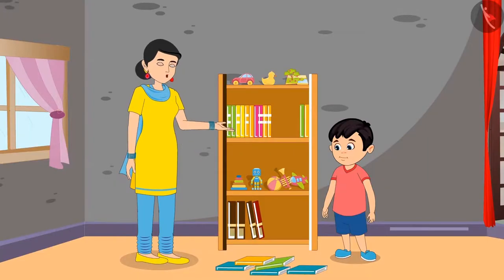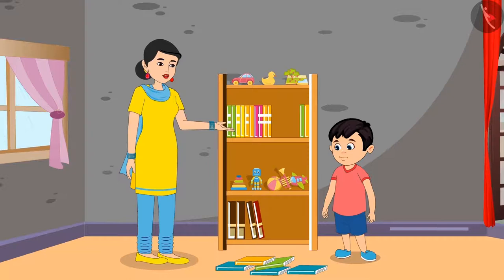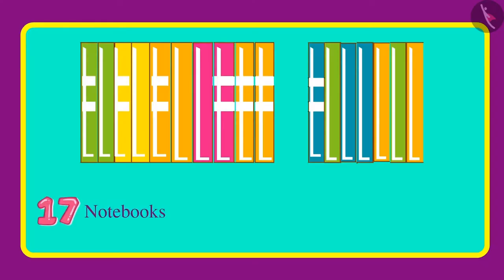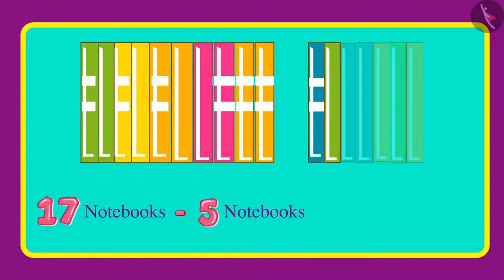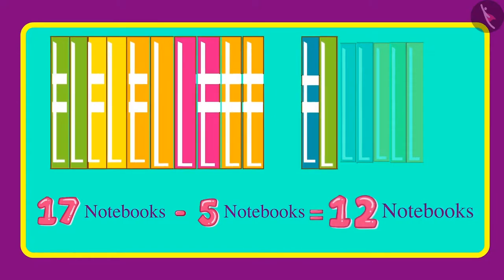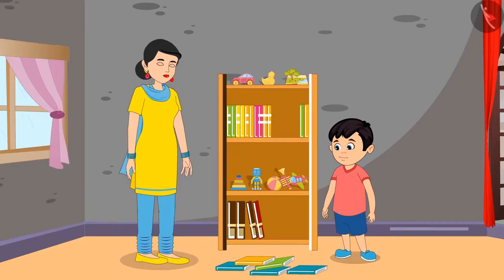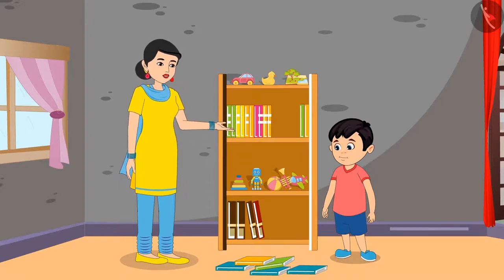Mother says, 'Now subtract the five used notebooks out of 17 notebooks. Tell me how many new notebooks you have.' Chonu works it out: 'Out of 17 notebooks, if we subtract 5 notebooks, we are left with 12 notebooks.' Mother says, 'Well done Chonu! Now keep the remaining notebooks separately.'